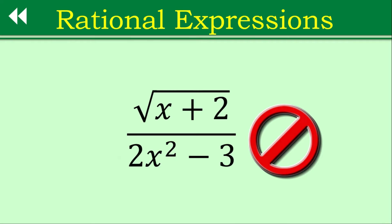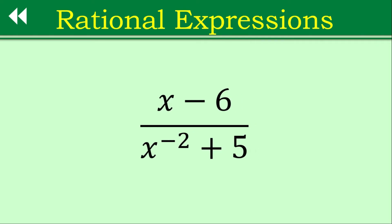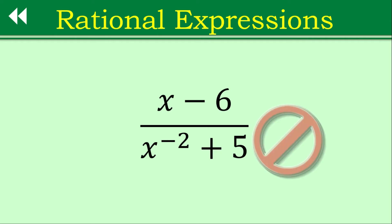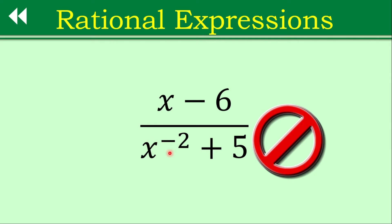Let's see another example. Is this a rational expression? It's a no — it's not a rational expression. Why? This is not a rational expression even though the numerator is a polynomial, because the denominator does not qualify to be a polynomial due to the negative exponent in the variable. That's based on our lesson number one for rational functions.